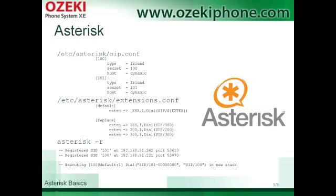You can find extensions.conf in the same place where the sip.conf was. Extensions.conf contains the routing rules. The XXX can mean any extension from 100 to 999. This line replaces the last three digits, so the file will be more transparent and simple.